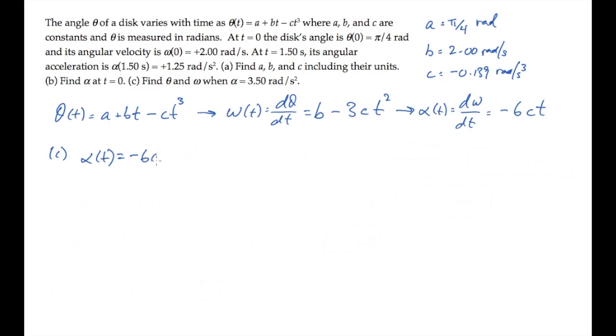We'll first use the expression for alpha to find the time when alpha has the given value. So 3.50 radians per second squared is minus 6c times t. Solve this for the time, and you find that it's 4.20 seconds.